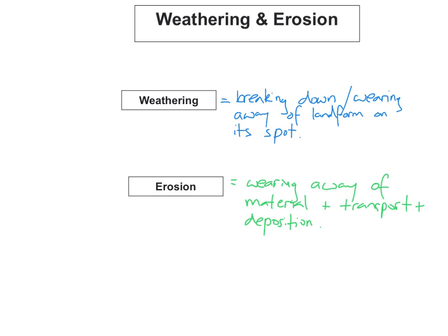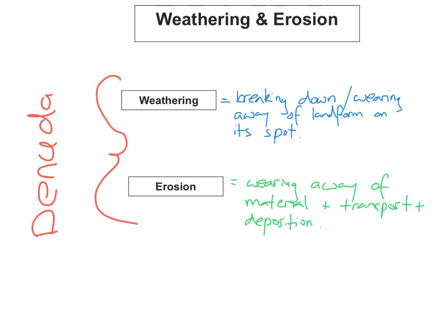These two things — weathering and erosion — we can classify into one group called denudation, which means the breaking down and removal of rocks through the action of either weathering or erosion.